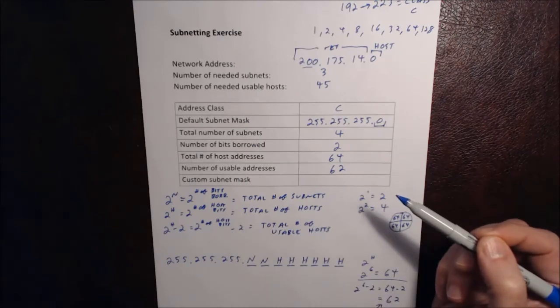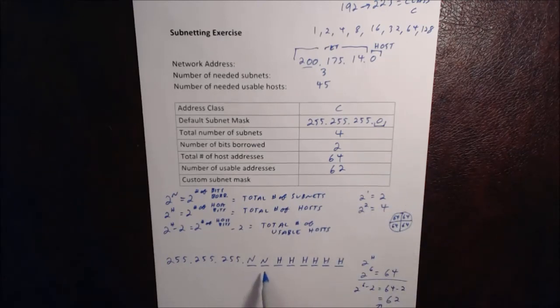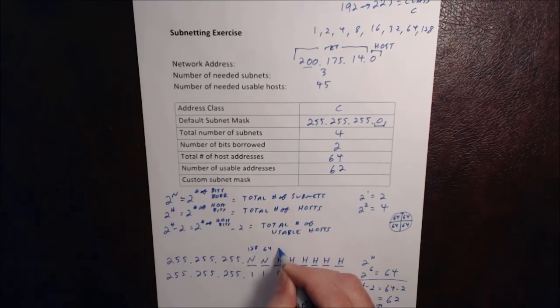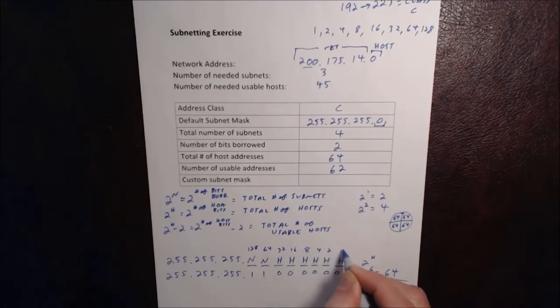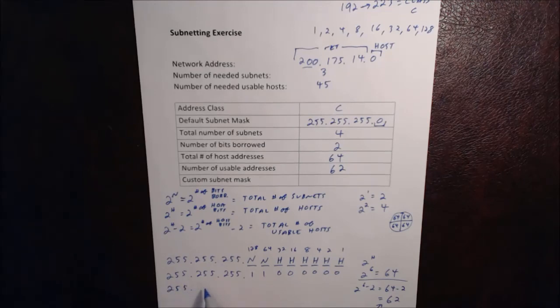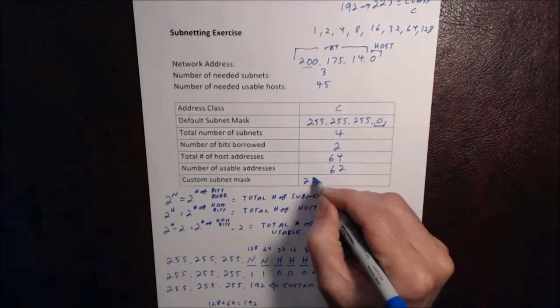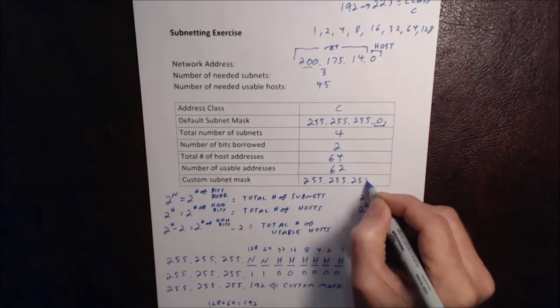So finally we get to the last component here, which is our custom subnet mask, and so we know which ones we borrowed for network and which ones are hosts, so if we keep going on with this and then where we've got the network bits, we're going to put 1s there and then 0s for the hosts, and then if we do the binary math here, we know that these bit places are worth 128, 64, 32, 16, 8, 4, 2, and 1. So then we get 255.255.255, we're adding up 128 plus 64, which equals 192, and that is our custom subnet mask. 255.255.255.192.